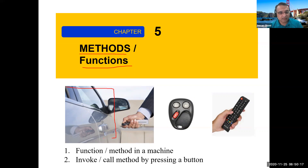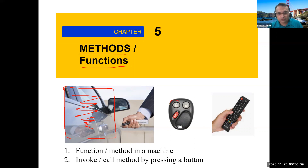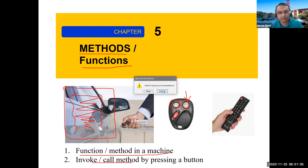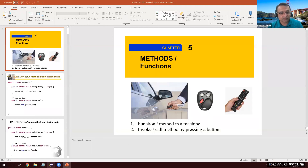For example, in a car we have certain functionalities like lock and unlock. That is a method — a piece of code or functionality inside the car's system. We call it using lock or unlock buttons. Whenever we press the lock button, the functionality responsible for locking the car is invoked, and the same for unlock. So we define functional methods and then we invoke or call them.